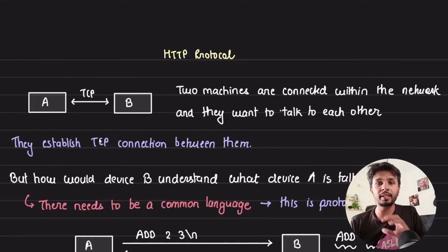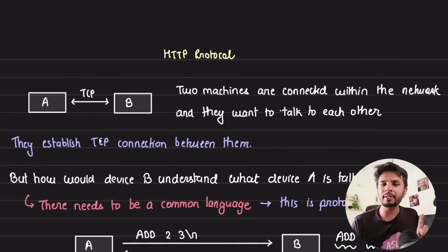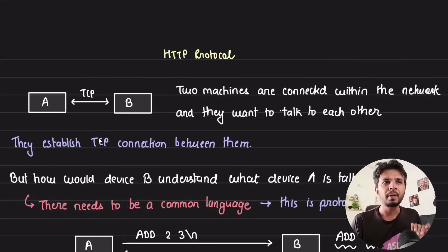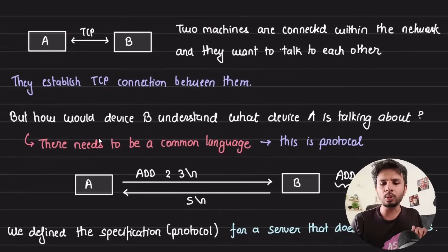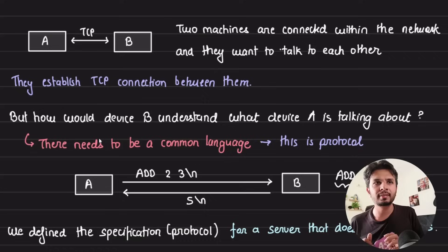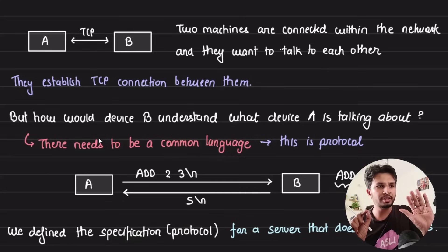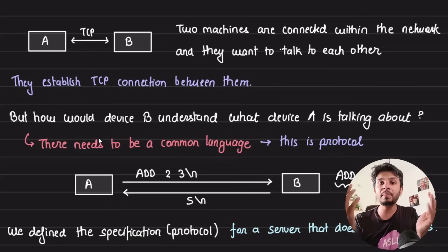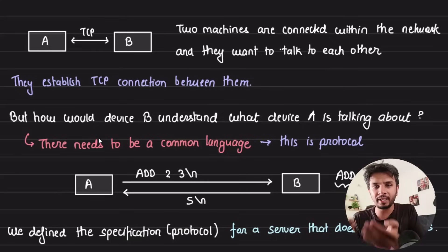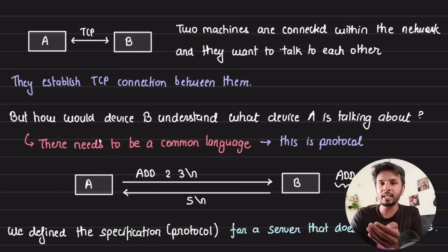Whenever two machines connected over a network want to talk to each other, they establish a TCP connection. But how would machine B understand what machine A wants? There needs to be a common language that A and B both agree on. For example, I am communicating in English and you are able to comprehend it.